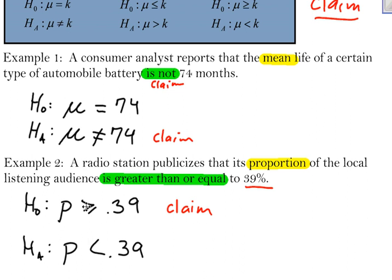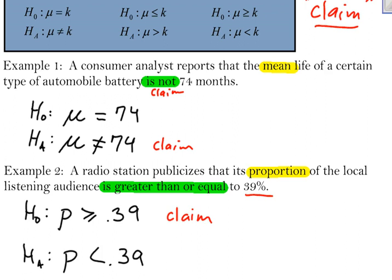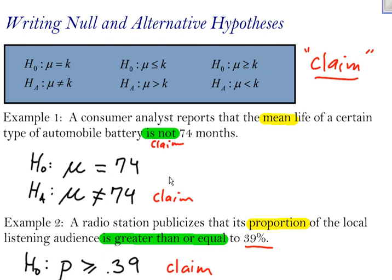The null and alternative, the symbols have to be complements to each other. This one's equal to, this one's not equal to. This one's greater than or equal to, so this one has to be less than. You will never see an equal to sign, or less than or equal to, or greater than or equal to sign in the alternative. It'll always be in the null hypothesis. So there's a couple of examples, basic examples, of how to write null and alternative hypotheses, and a couple of little tips that should help you when you're writing them.